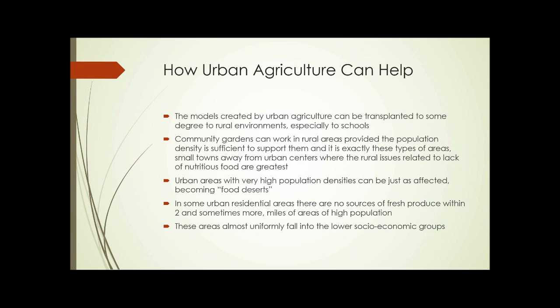So how can urban agriculture help? The models created by urban agriculture can be transplanted to some degree to rural environments and especially to schools. Community gardens can work in rural areas provided the population density is sufficient to support them, and it is exactly in these types of areas — small towns away from urban centers — where rural issues related to lack of nutritious food are greatest. Urban areas with very high population densities can be just as affected, becoming food deserts where there are no sources of fresh produce within two or more miles, almost uniformly in lower socioeconomic groups.